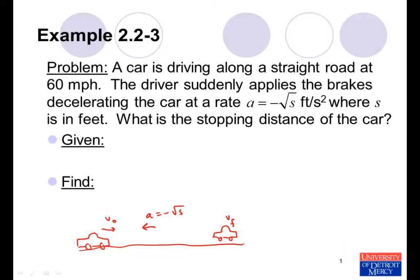Once we understand the problem, we then try to identify what's given and what we're trying to find. We're told that the car is initially driving along the road at 60 miles per hour. So that is our initial velocity. The driver suddenly applies the brakes and it decelerates at this rate. And we want to know the stopping distance of the car.